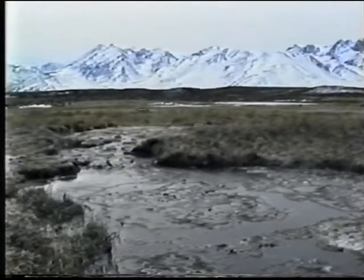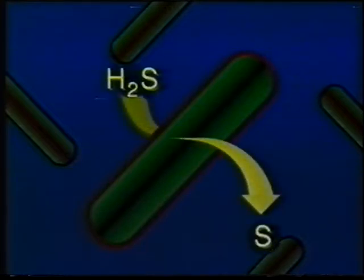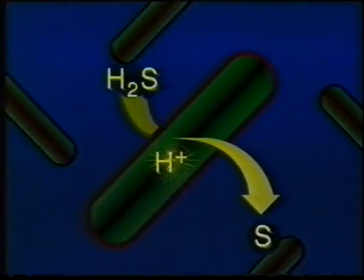You can find bacteria today that may be descendants of those early light harvesters — bacteria that use hydrogen sulfide and the energy from light to make their own food molecules. These bacteria use light energy to split hydrogen sulfide, yielding sulfur, a waste product, and two particles that can be used in energy transactions: hydrogen ions and energetic electrons.